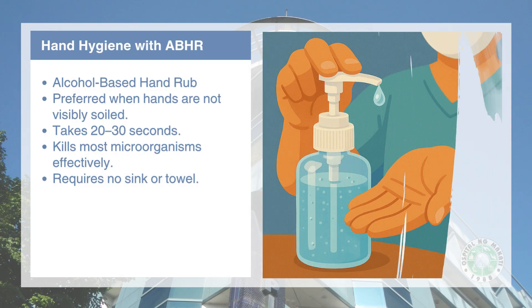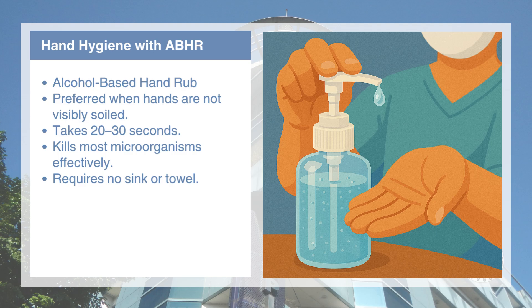Alcohol-based hand rub (ABHR) is recommended when hands are not visibly soiled because it kills most microorganisms quickly and efficiently. It only takes 20 to 30 seconds for hand rubbing with ABHR to be effective. Make sure to cover all surfaces of your hands and allow it to dry naturally without wiping.